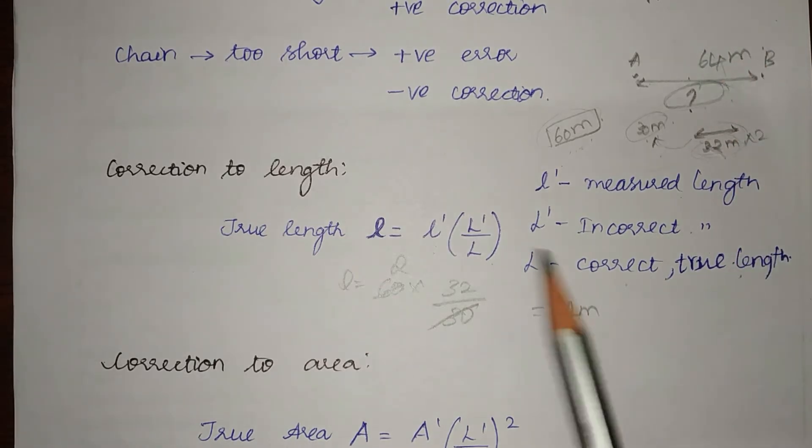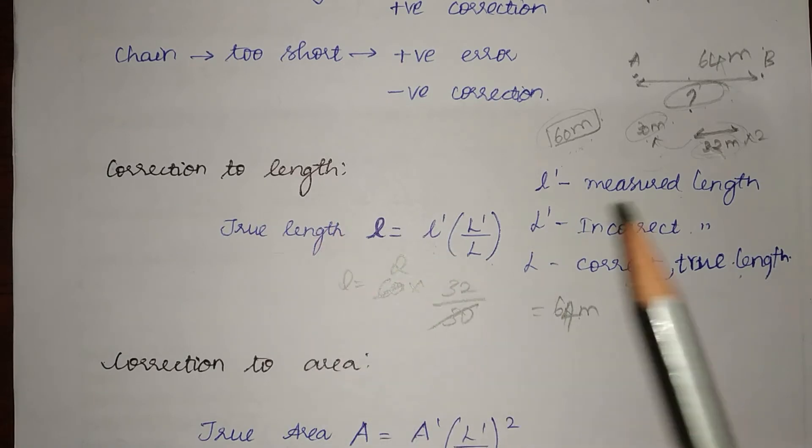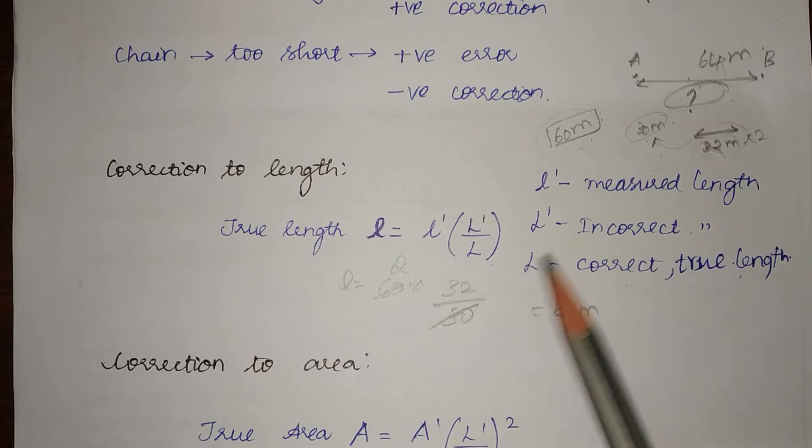This is how we will find the true length when we have made a mistake or when there has occurred an error due to incorrect chain.